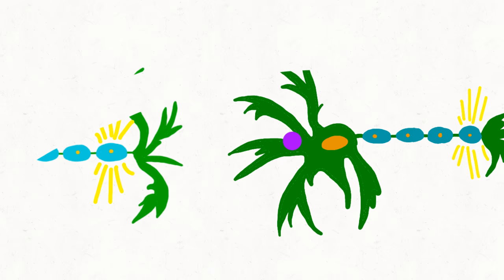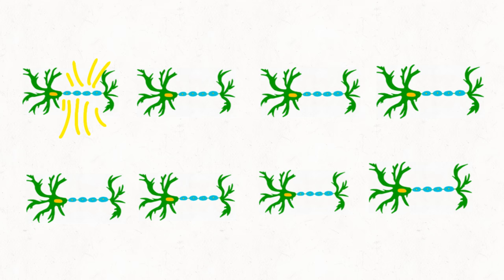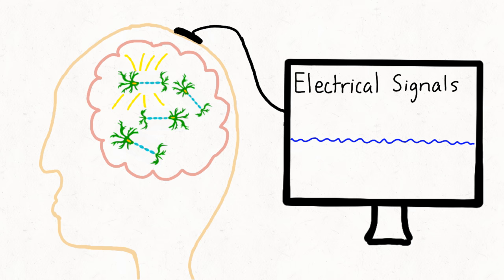So in order to read the brain, we can just read the information that each individual neuron transmits, right? Unfortunately, there are too many neurons to track individually, and the electrical signal produced by a single neuron is not strong enough to be detected from outside the scalp, where the EEG headset sits.